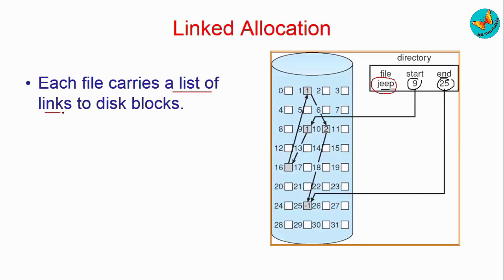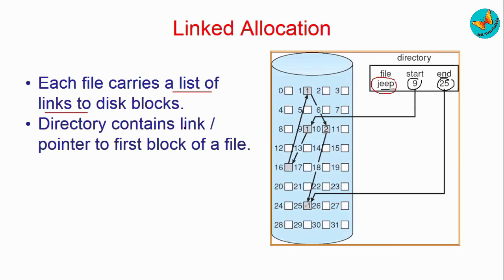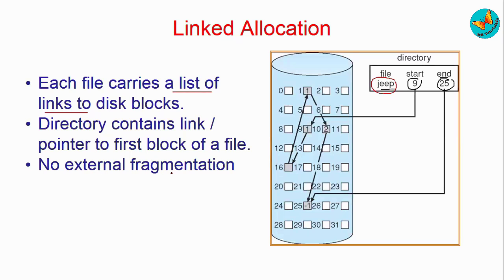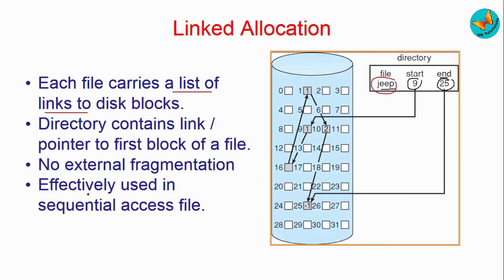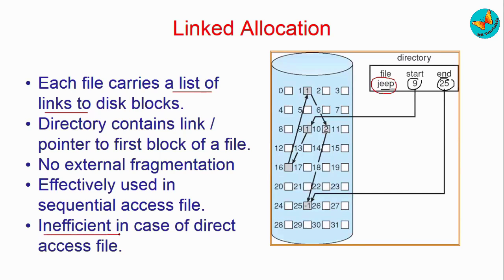The directory consists of pointers to the first block of the file, so it knows where the first block starts. Since no block is wasted as in contiguous allocation, linked allocation does not suffer from external fragmentation, and it is very effectively used in sequential access files — you just go from one block to another. However, the drawback is that it is inefficient for direct access, meaning if you want to directly access a particular block, that is not possible in linked allocation.